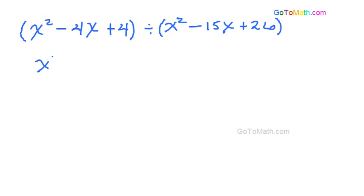However, we're now going to rewrite it. x squared minus 4x plus 4 over x squared minus 15x plus 26.